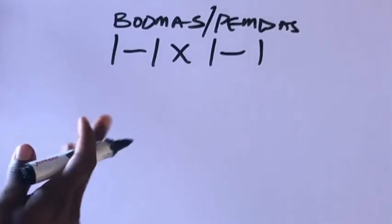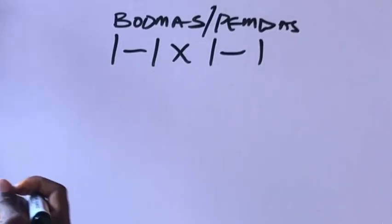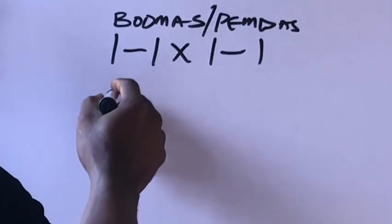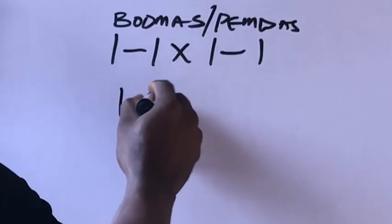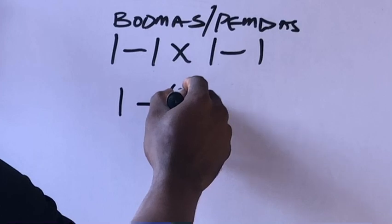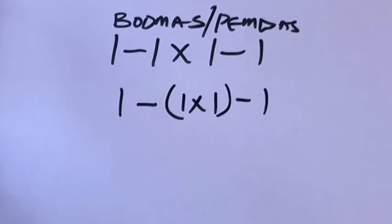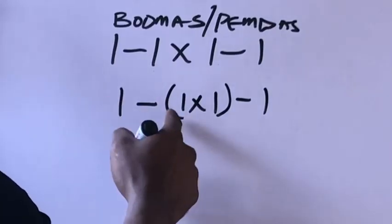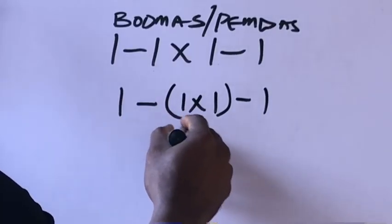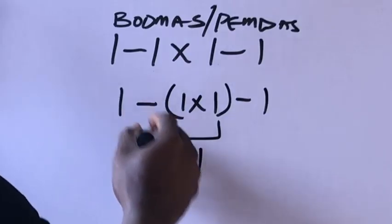I would like us to rewrite this math problem like this: one minus, in brackets, one times one, minus one. Now one times one will give us one.